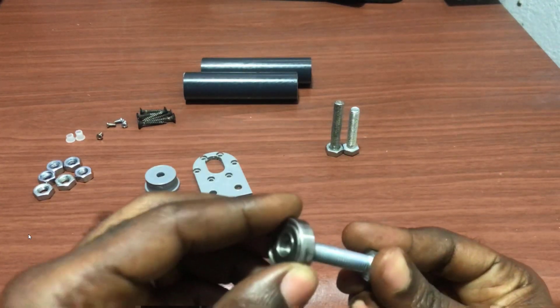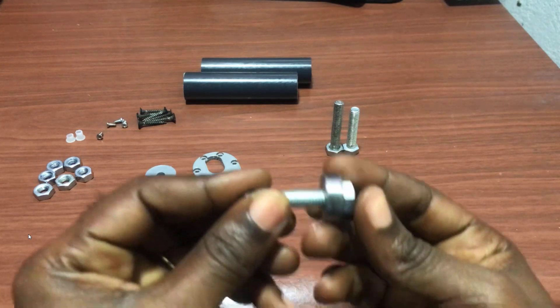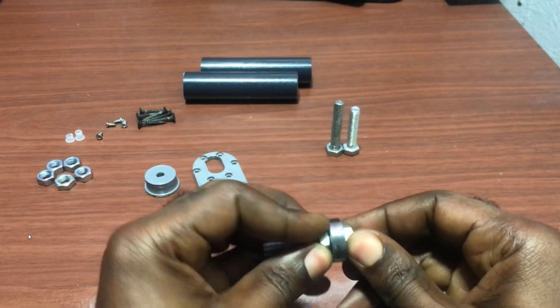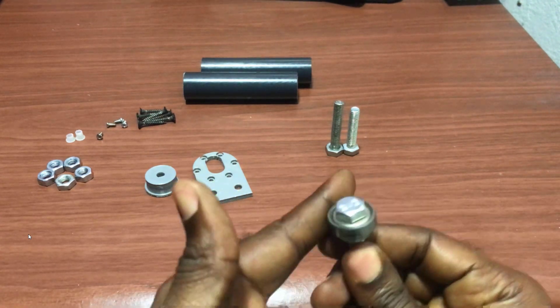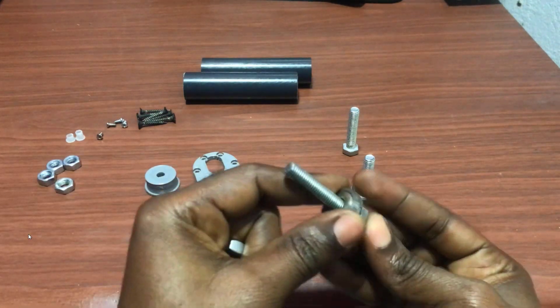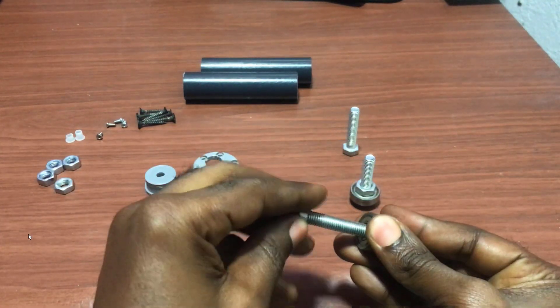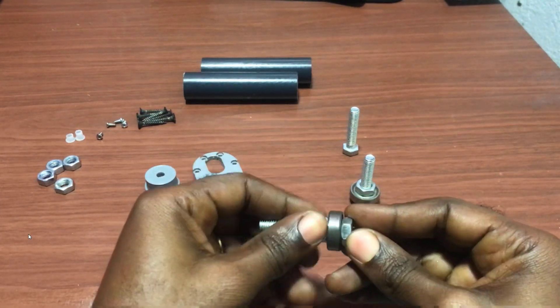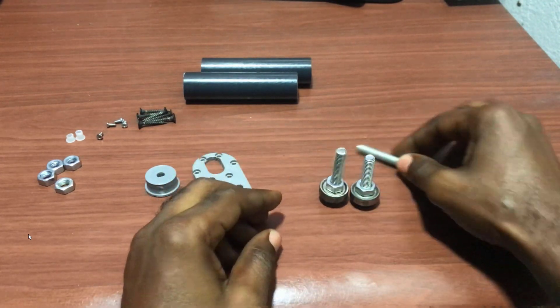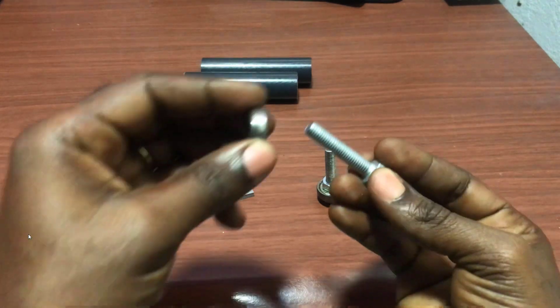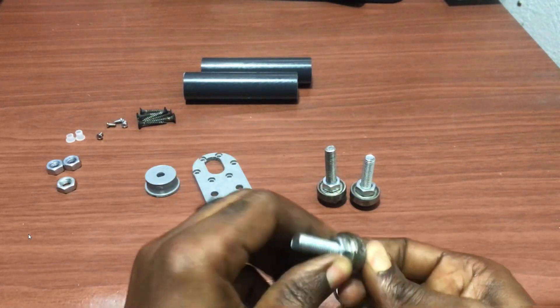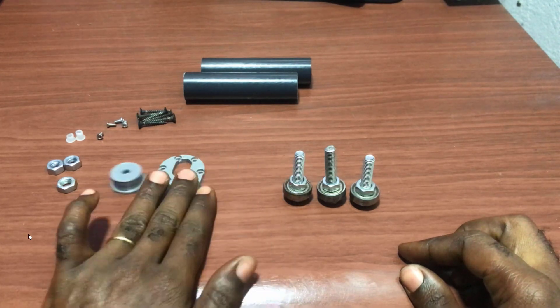Now let's move on and put things together. We put the ball bearing into the 8mm bolt and then secure it. We do the same for the next one. We have two of them fixed, and then the last one. We place the nut on it and secure it as well.